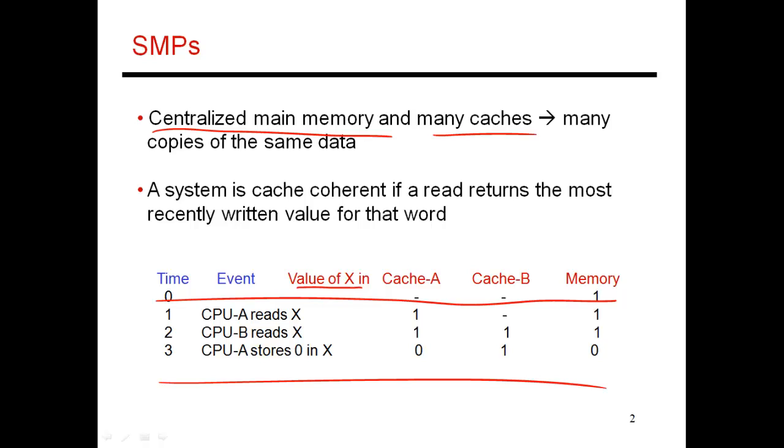Then processor A in time 1 decides to do a read of x. So that value gets brought into its own cache, and it currently has the value 1. In time step 2, CPU B reads the value of x, so it brings a cache copy of x into its own cache. There are two cache copies and a copy in memory. They all agree that the value of x is 1. Then at time 3, CPU A decides to write a 0 into x.